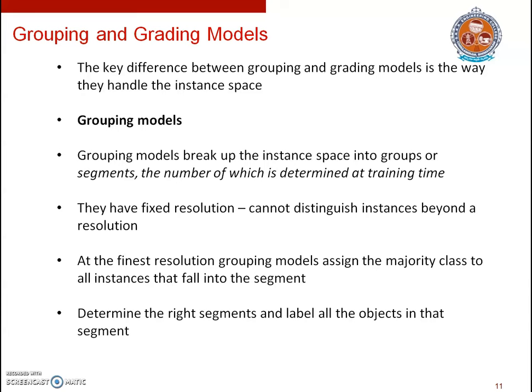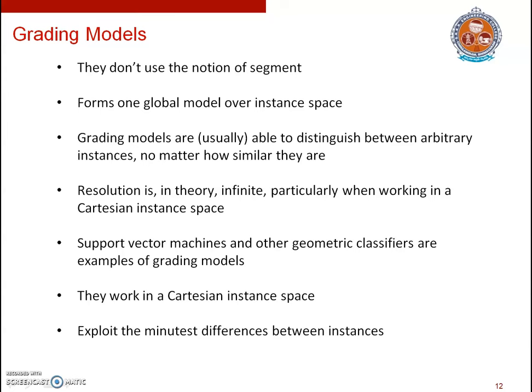Grading models, on the other hand, do not employ the notion of a segment. Rather than applying very simple local models, they form one global model over the instance space. Consequently, grading models are able to distinguish between arbitrary instances no matter how similar they are — their resolution is infinite, particularly when working in the Cartesian instance space. Support vector machines and other geometric classifiers are examples of grading models. They work in the Cartesian instance space and are capable of representing and exploiting the minutest differences between instances.